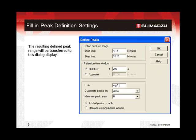Once the peak range has been defined, a dialog display will appear showing the time points used to define the start and end points of the range. In this display, it is possible to make a selection for the setting of the retention time window. The relative window selection sets the retention time leniency to a plus/minus percentage of the peak retention time, which will calculate retention time windows that steadily increase in width. The absolute window allows selection of a fixed plus/minus time range that would, by default, apply to all defined peaks.